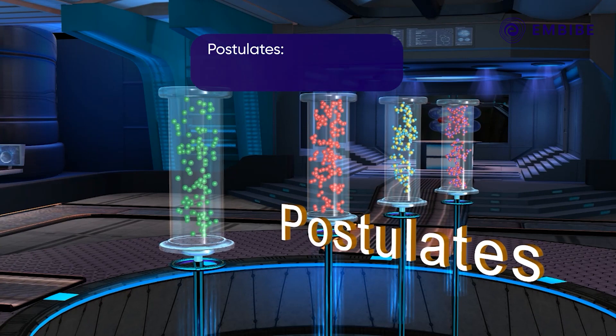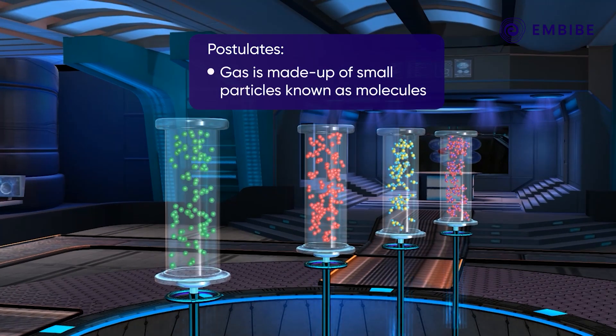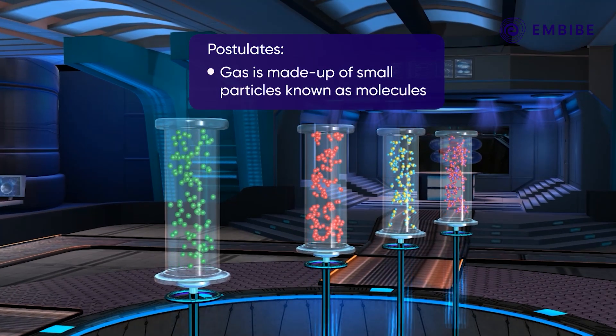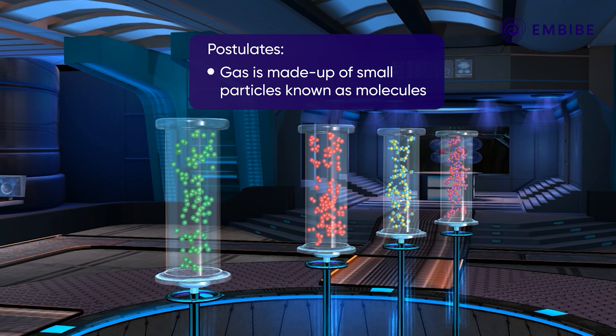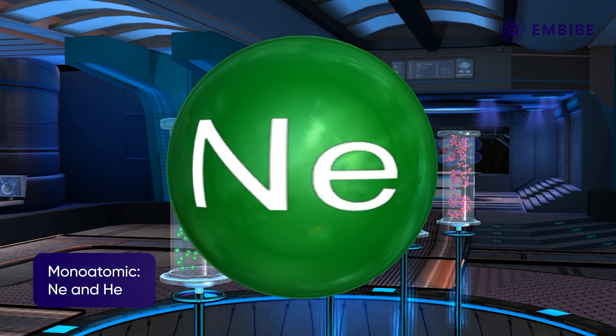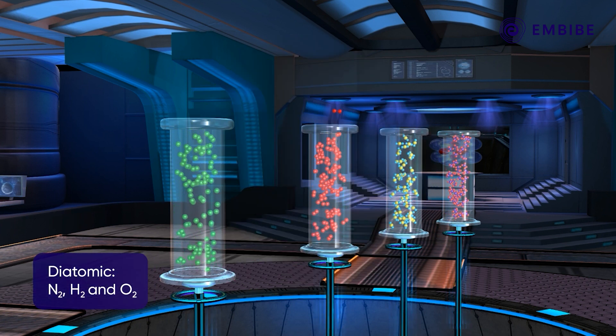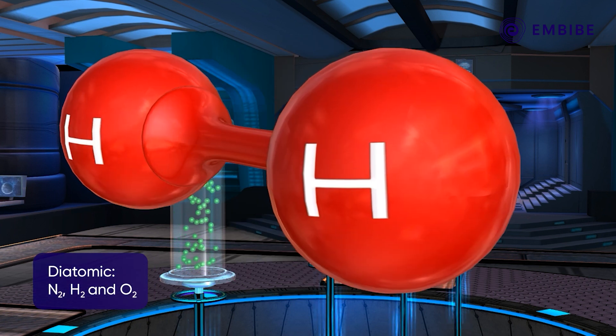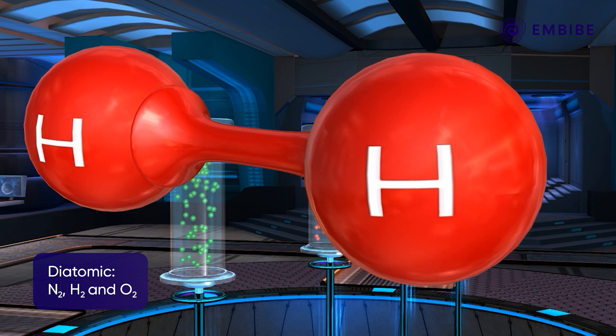Postulate number one: Gas is made up of small particles. These particles are known as molecules of the gas. Gas constituents can be monatomic (example: Ne, He), diatomic (example: N2, H2, O2), triatomic (example: CO2), or polyatomic (example: NH3).